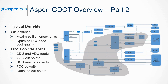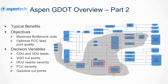Another application of GDOT is conversion area optimization. When optimizing conversion area, GDOT coordinates the CDU, VDU, coker, hydrocracker, and the fluidized catalytic cracker. GDOT maximizes the utilization of bottleneck downstream units and optimizes the FCC feed pool quality.